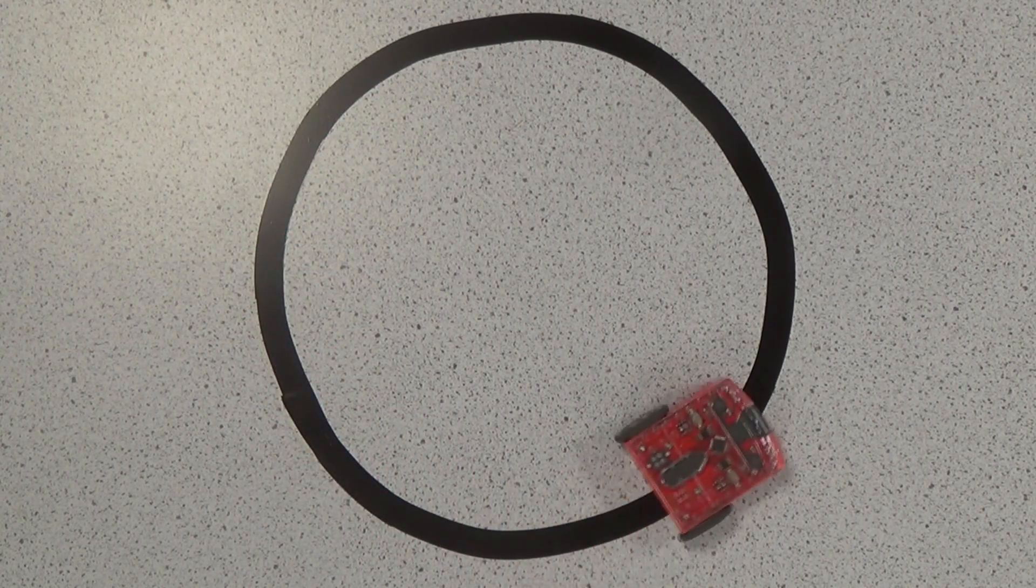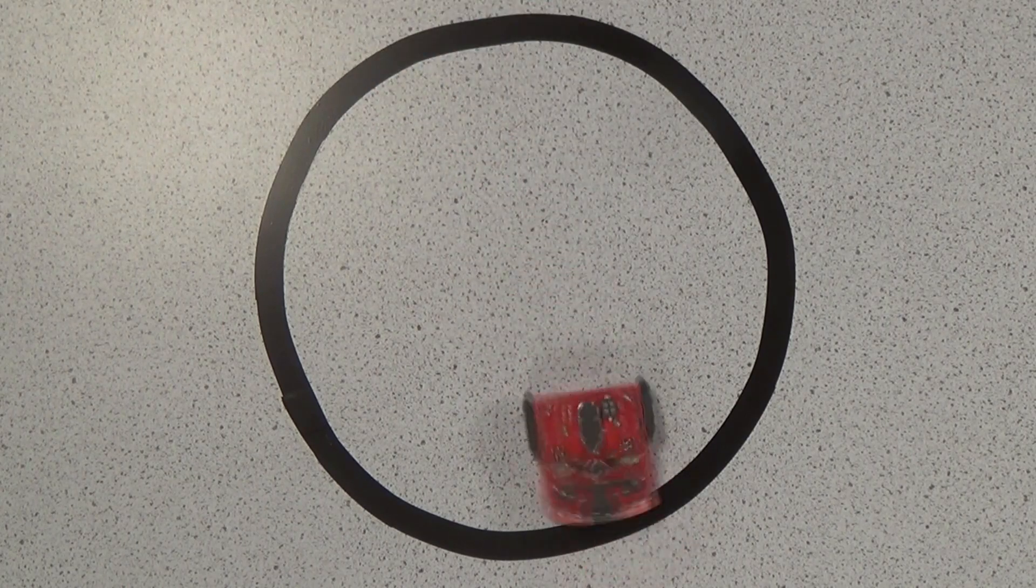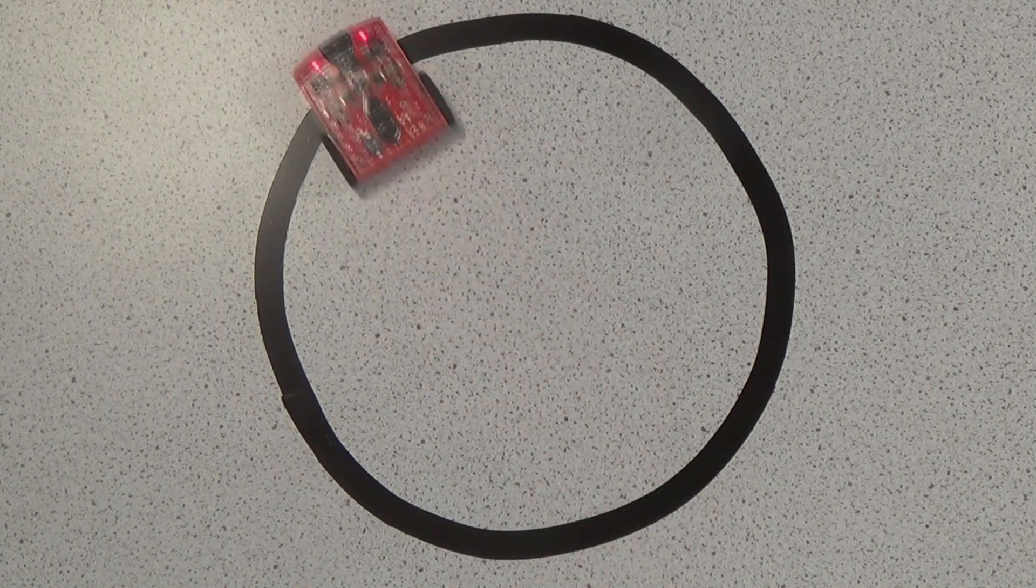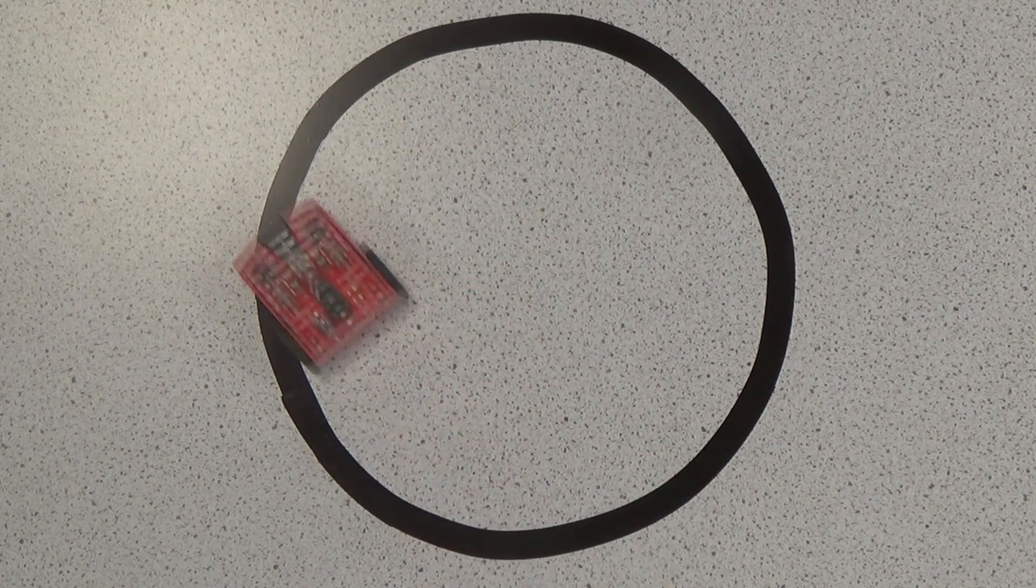Another code allows Edison to continually bounce around inside the line we've made. It'll happily do this all day, or at least until its batteries run out. These two programs both make use of Edison's line tracking sensor.